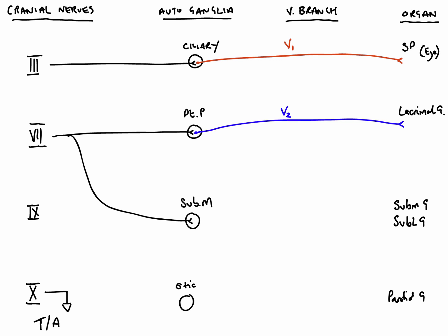Post-synaptic fibres from the submandibular ganglion travel to the submandibular gland and the sublingual gland — the submandibular gland is under your mandible and the sublingual gland is underneath your tongue. These travel via the third division of the trigeminal, which is the mandibular division.